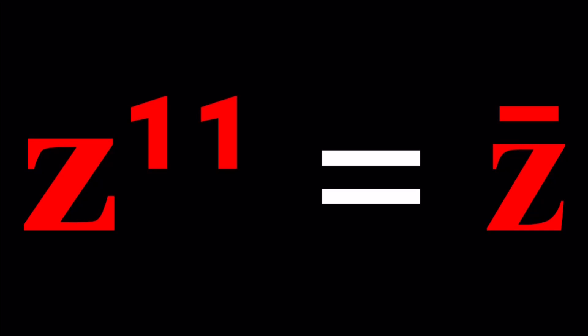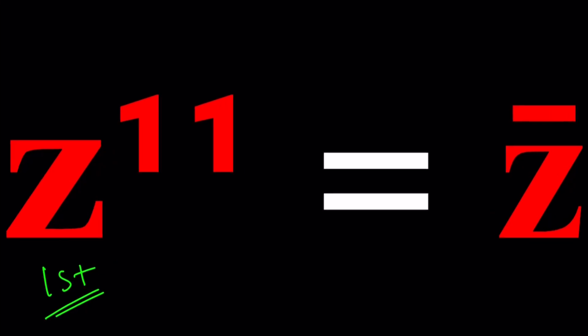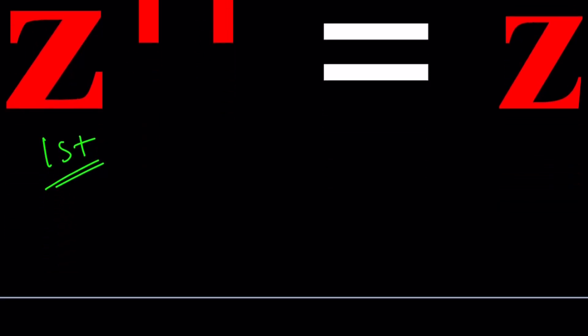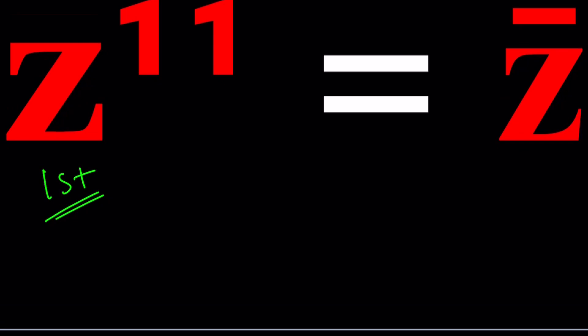We have a complex number Z which is raised to the 11th power, and then it becomes equal to its conjugate. How is that possible? Think about it for a minute, and then we'll take a look. So for my first method, I'm going to do what I usually do most of the time when I get an equation like this. I'm going to replace Z with something. What is the name of this channel? If you said A plus B I, you got it right.